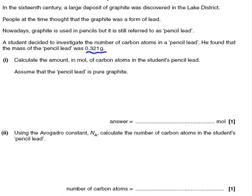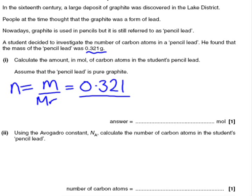For part one, you need to calculate the number of moles. To convert a mass into moles, you need to use the relationship: number of moles is equal to mass over Mr, which in this case is therefore equal to 0.321 grams divided by the molecular mass, or in this case the relative atomic mass of carbon, which is 12.